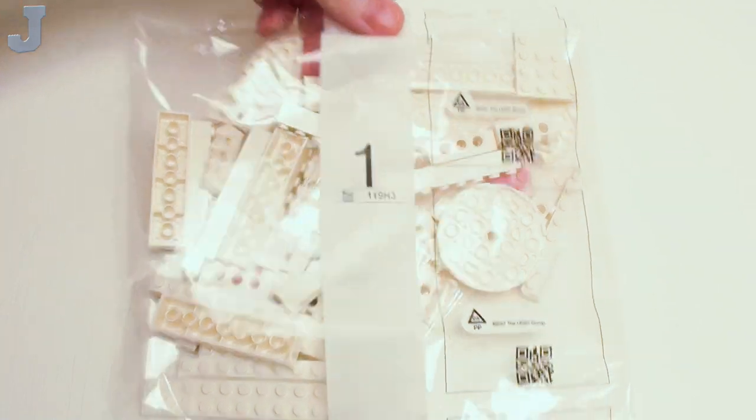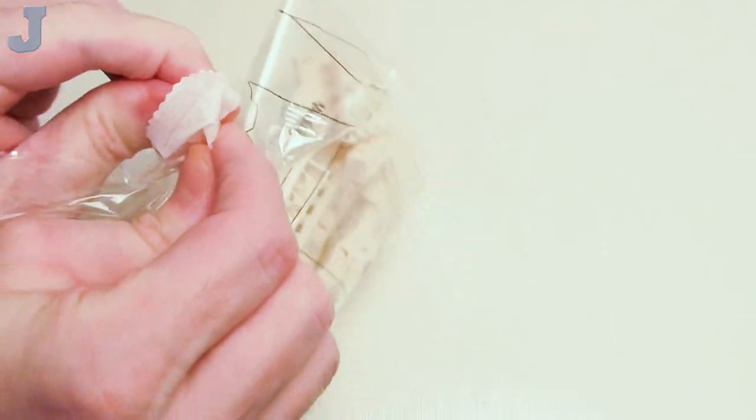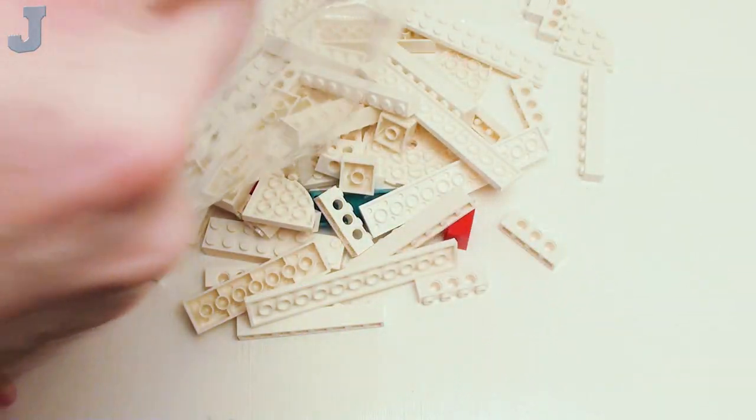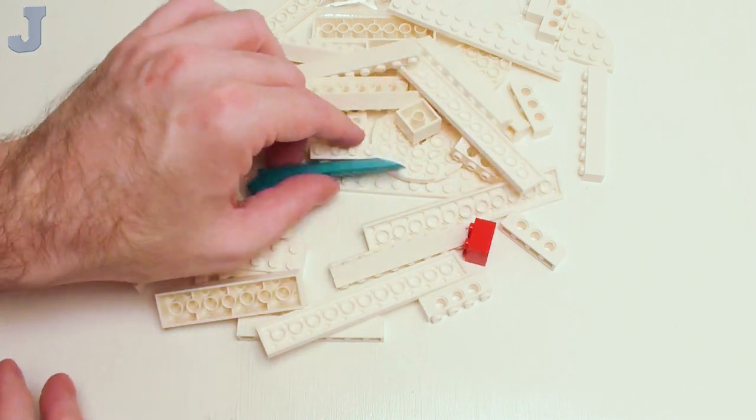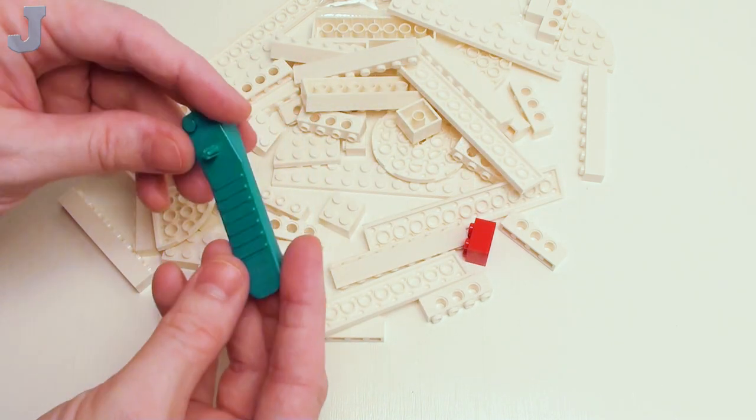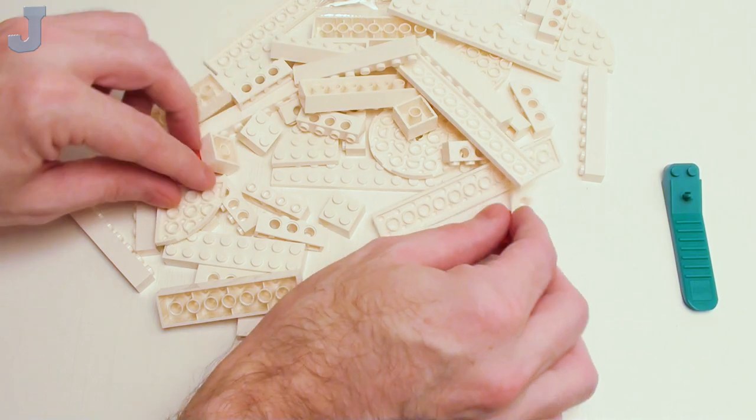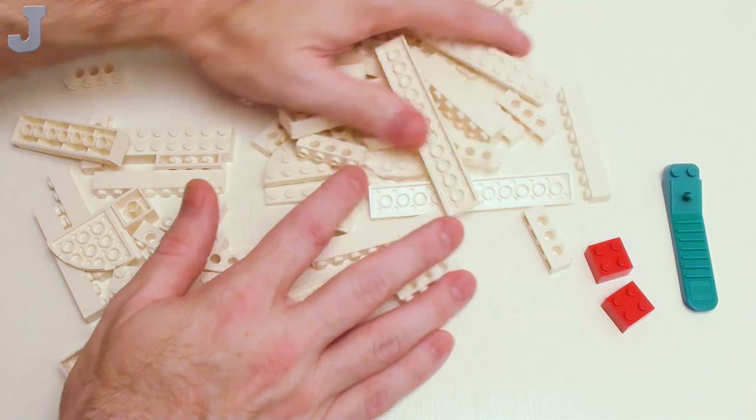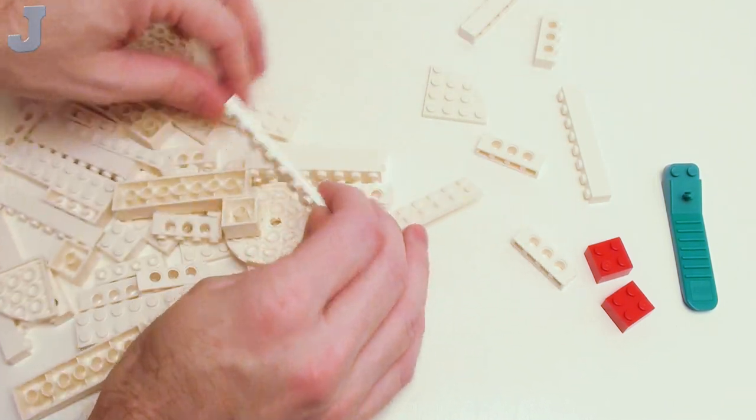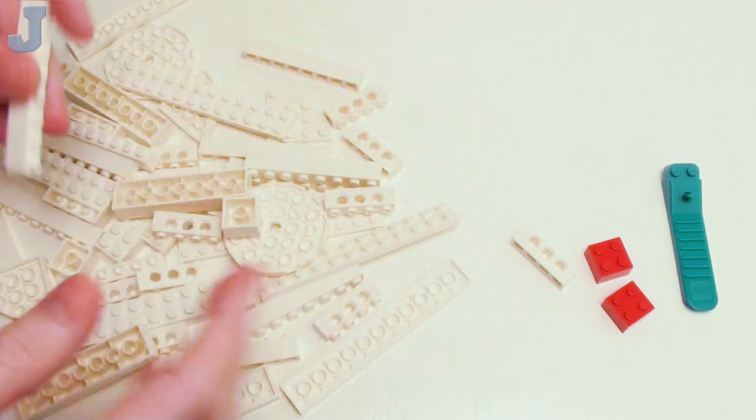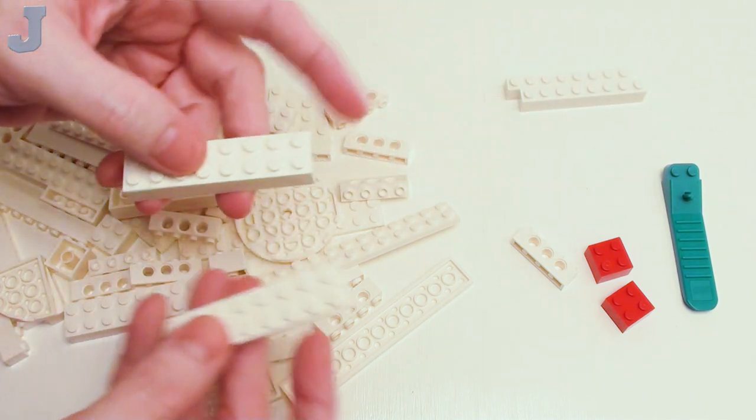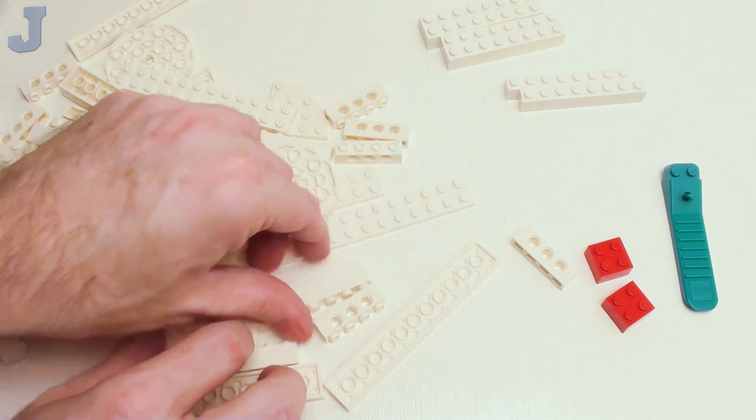Well, this is a nice start with bag one. It's all white bricks. Well, that's not too colorful in there, is it? So the brick separator and two of these red two-by-two bricks are the only color that's in here.